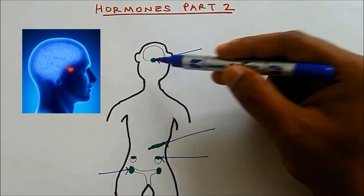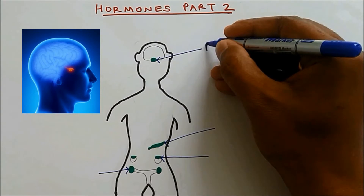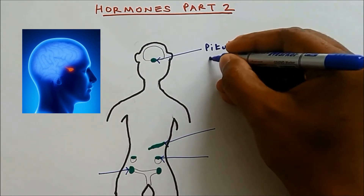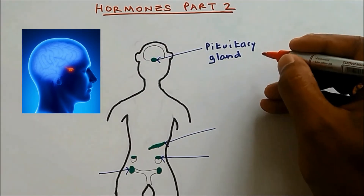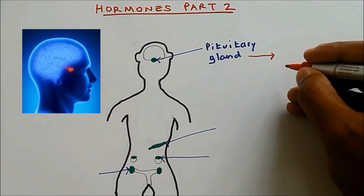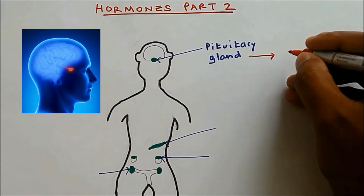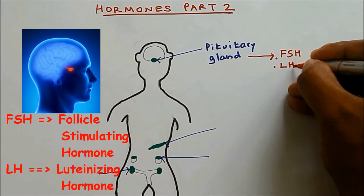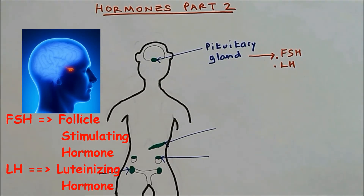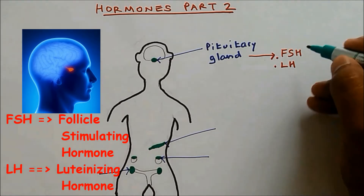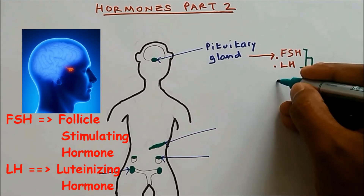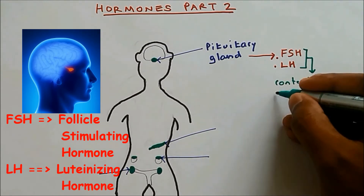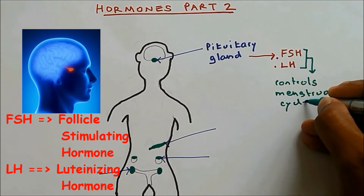Between the eyebrows there is an important gland called the pituitary gland. The pituitary gland releases two important hormones called FSH and LH. FSH stands for follicle stimulating hormone and LH stands for luteinizing hormone. Both are involved in controlling the menstrual cycle.